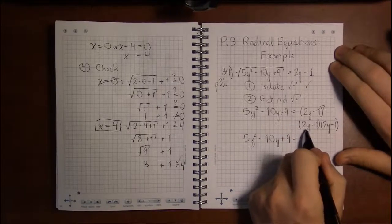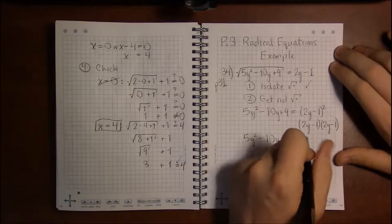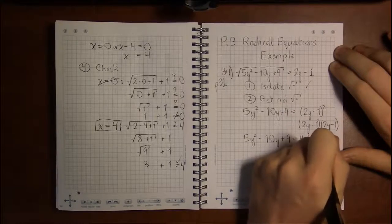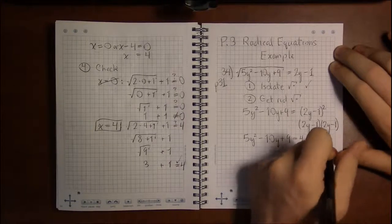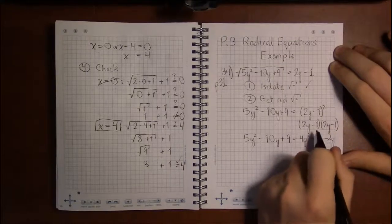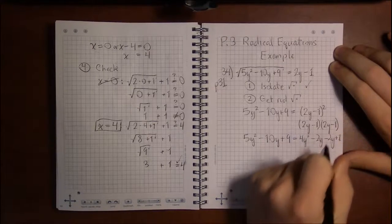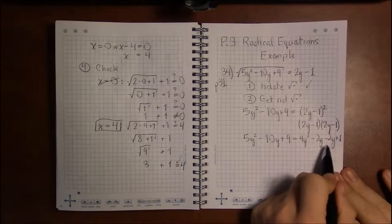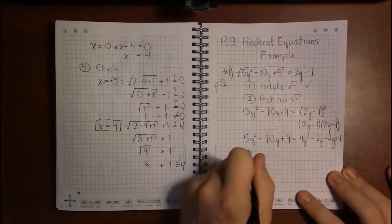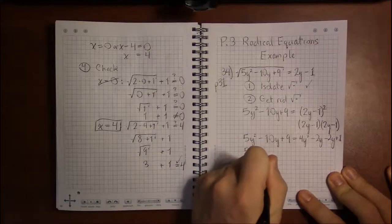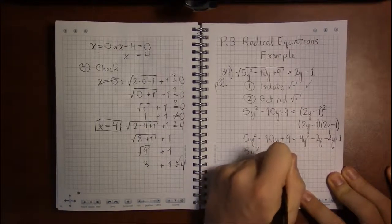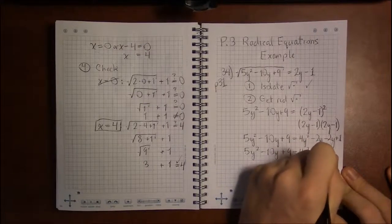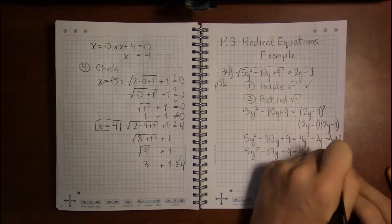And then on the right, foiling or distributing, we have 2y times 2y is 4y squared. 2y times minus 1 is minus 2y. Minus 1 times 2y is minus 2y. Minus 1 times minus 1 is plus 1. So we can simplify a little bit on the right-hand side. Minus 2y and minus 2y is going to become minus 4y. So we have 4y squared minus 4y plus 1.